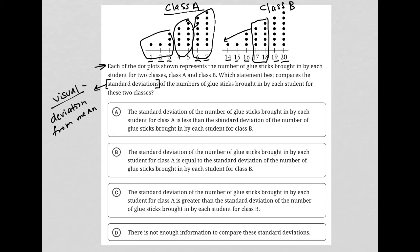So visually, the deviation is exactly the same for Class A and Class B. So I'd expect the correct answer here to say that the standard deviation for Class A and for Class B must be equal. So let's find that. Choice A says the standard deviation of the number of glue sticks brought in by each student for Class A is less than. So I don't like that. Choice B says it is equal to—like that. So that's what I'm going to go with. And I'm fairly certain that that's the correct answer.